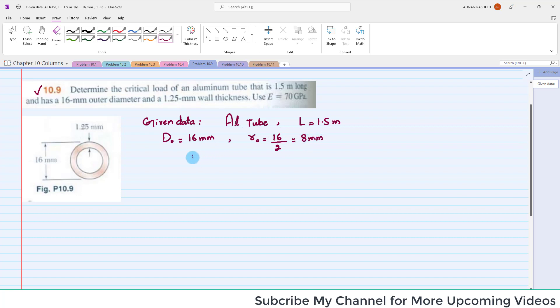Also, the thickness of the tube t is given as 1.25 millimeters, and E is equal to 70 gigapascals.